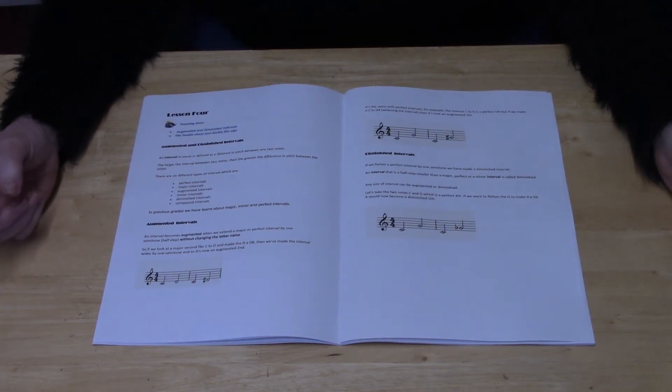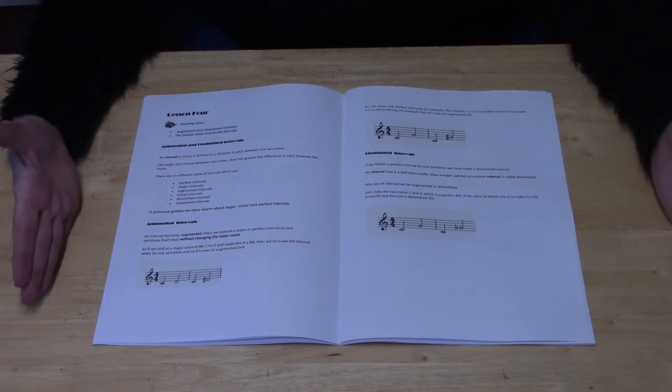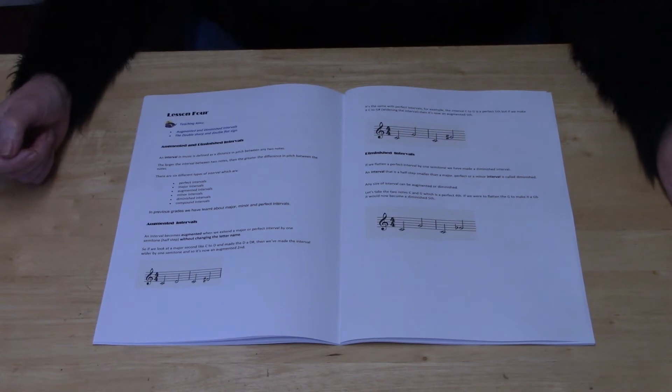Hello and welcome to Lesson 4 of the Grade 5 Theory online course. In this lesson, the teaching aims are to learn about augmented and diminished intervals and also to learn about the double sharp and the double flat sign.